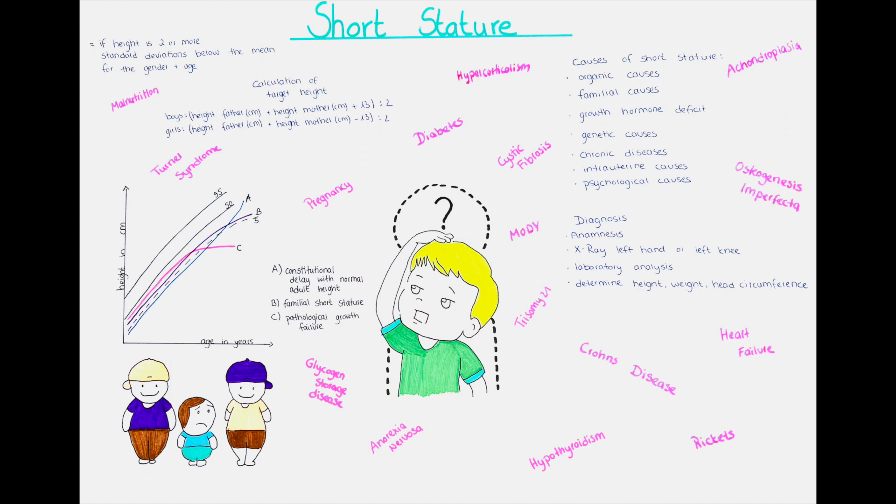The next group of causes are skeletal anomalies. An example for that is rickets, about which you can hear more in our video about it. Other diseases in that group include osteogenesis imperfecta, a genetic disorder in the collagen formation which leads to frequent fractures and deformities.